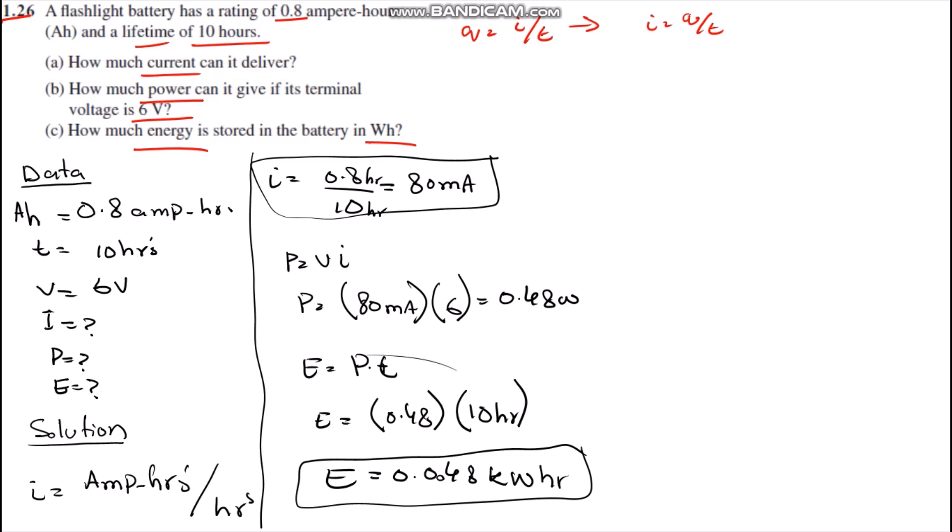Therefore, we have sorted out the data from the question. Then we solve it like i equals ampere-hours divided by hours. Therefore we simply divide 0.8 ampere-hours by 10 hours. Therefore we get 80 milliamperes.